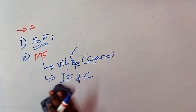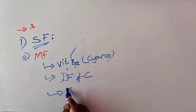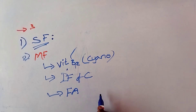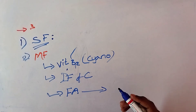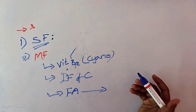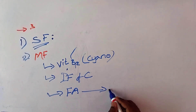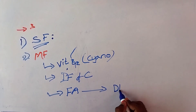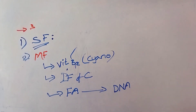The third maturation factor is folic acid. Folic acid is required for synthesis of DNA. RBC needs DNA to mature completely, so folic acid is required for synthesis of DNA in RBC.